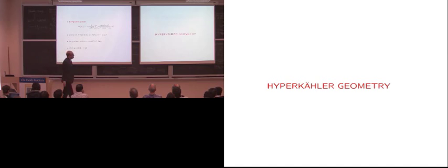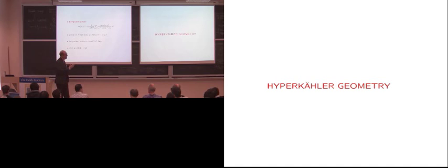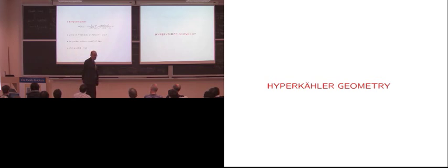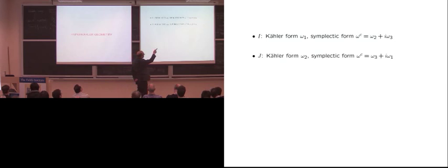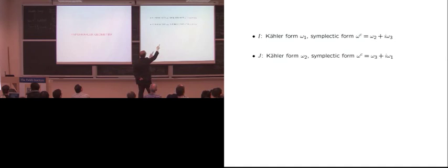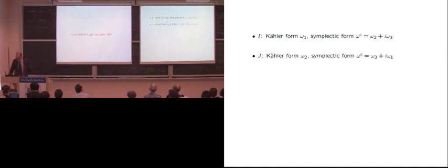That's focusing on one complex structure in the hyperkähler family. The complex structure I call I is the Higgs bundle complex structure — this is where you get the fibration structure. But the moduli space has a hyperkähler structure, so one needs to understand also the other complex structures J and K. In complex structure I, the holomorphic symplectic form is omega2 + i·omega3. Complex structure J has the Kähler form equal to the real part of that holomorphic symplectic form.